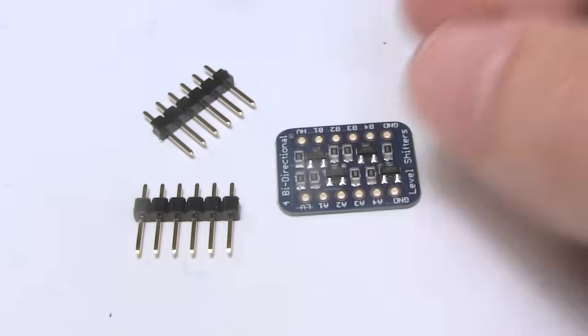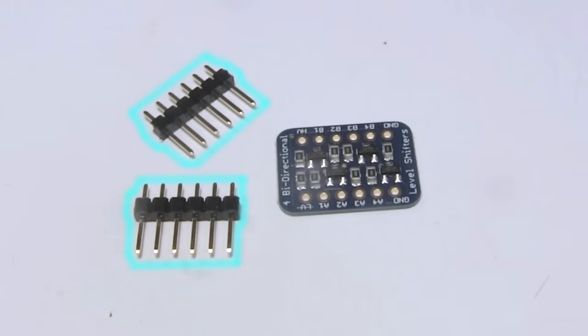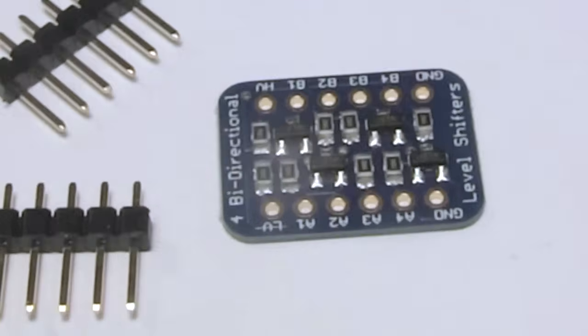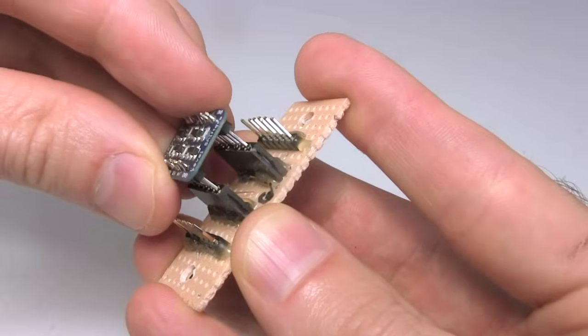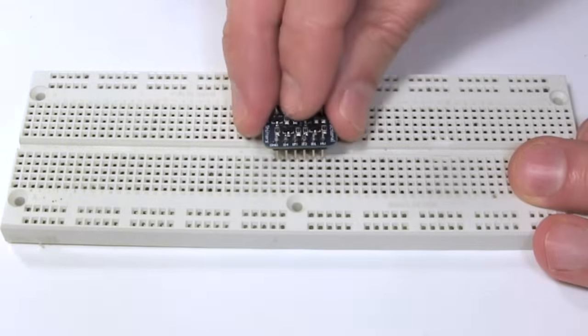I'll use this level shifter board as an example. It's meant to work with these male headers. You can see it has no screw holes for mounting it. Instead, you're expected to solder these pin headers to it, and then put it in a socket of some sort, or a breadboard.